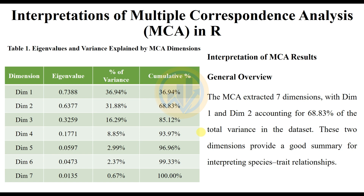The first table presents eigenvalues and variation explained by the Multiple Correspondence Analysis. Dimensions one through seven are shown along with eigenvalues, percentage of variation, and cumulative percentages — all values are presented in Table 1. For the interpretation of MCA results, a general overview: the MCA extracted seven dimensions, with dimensions one and two accounting for 68.83% of the total variation in the dataset.